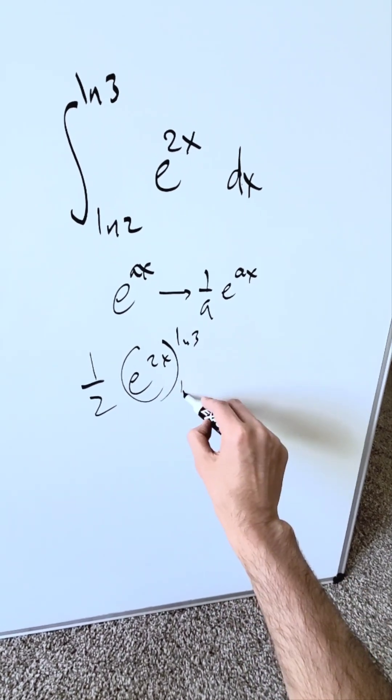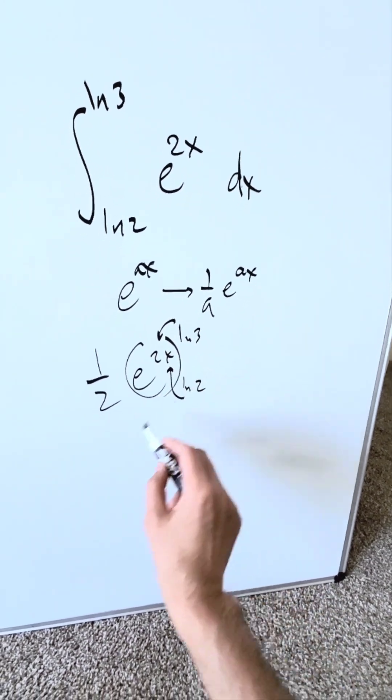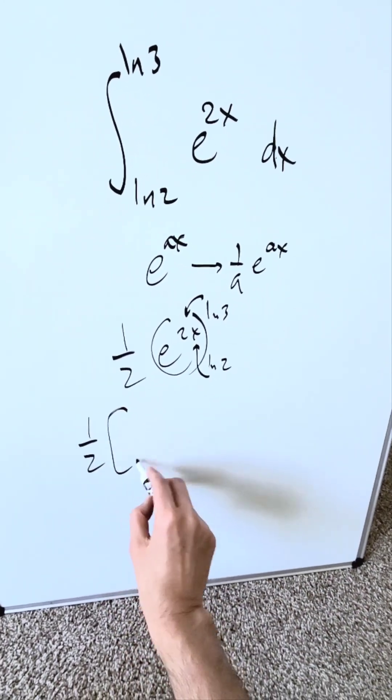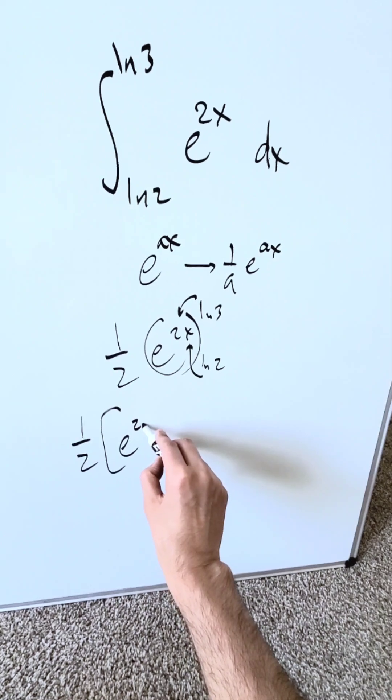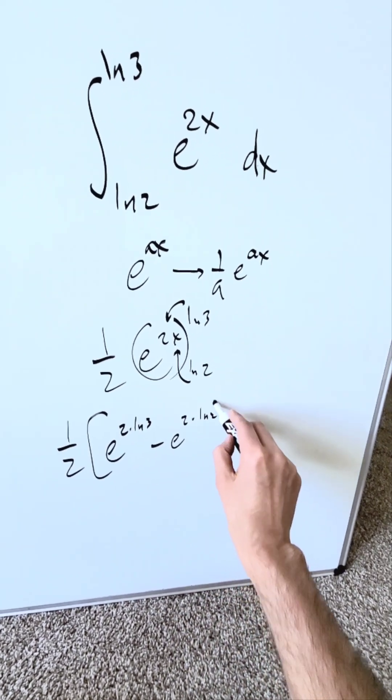Natural log 3, natural log 2, the limits. You'll put the upper limit in place of x and the lower limit, the difference of the 2. I'll have 1 over 2 e to the power of 2 times natural log 3 minus e to the power of 2 times natural log 2.